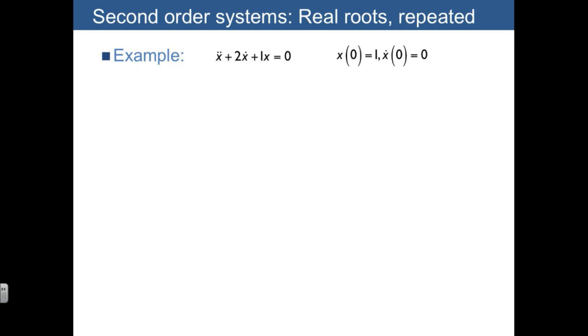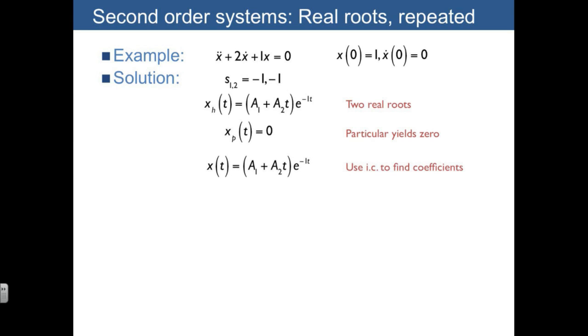Next is the case of two real repeated roots, where x double dot plus 2x dot plus 1x yields two roots, both equal to negative 1. And the homogeneous solution in this case has two terms, a1 e to the negative 1t, and then the second term, a2t times e to the negative 1t. The particular solution, again, is 0. And again, we can use initial conditions to find the coefficients, but let's just take a look at what the response actually looks like.